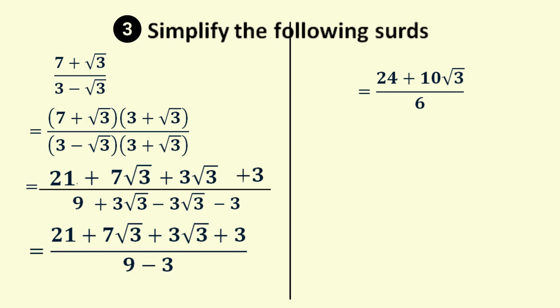We can put each term in the numerator over 6. Now 24 over 6 is 4, while 10 over 6 reduces to 5 thirds. So our final answer is 4 plus 5 root 3 over 3.